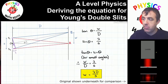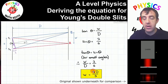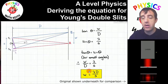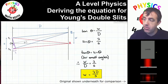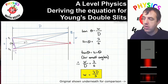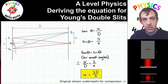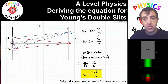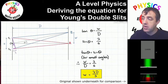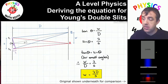We can also see what happens when I change the wavelength. Right now we have red light, which has quite a large wavelength. If I reduce the wavelength, the fringe separation should decrease. Switching from red to green light makes the distance between fringes noticeably smaller. Reducing the wavelength further to blue light makes the fringe separation even smaller.